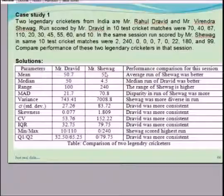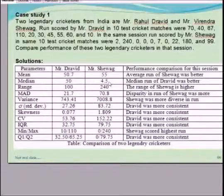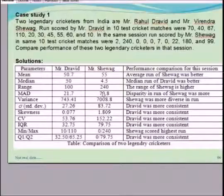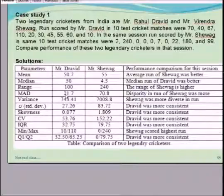We can see that the average run of Sehwag was better. If you compare the medians — 55 and 45 — the median run of Dravid was better. If you compare the ranges — 100 and 240 — the range of Sehwag is higher. If you compare the mean absolute deviations, a lesser MAD value means more consistency; a higher MAD value means more inconsistency.